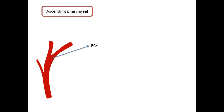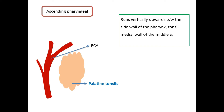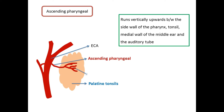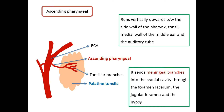The ascending pharyngeal artery is a small branch that arises from the medial side of the external carotid artery. It runs vertically upwards between the side wall of the pharynx, the tonsil, the medial wall of the middle ear, and the auditory tube. It sends meningeal branches into the cranial cavity through the foramen lacerum, the jugular foramen, and the hypoglossal canal.